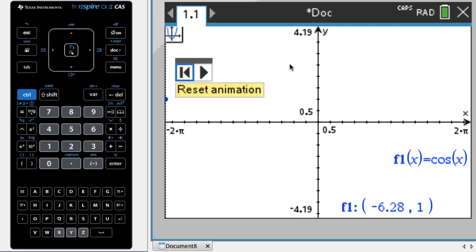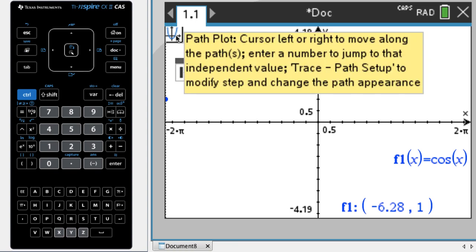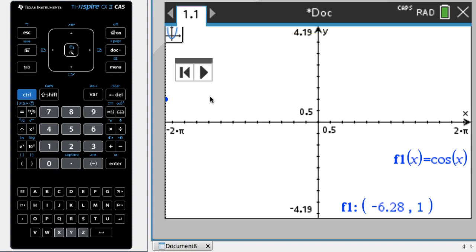And what I want to do this time is there's kind of an interesting feature. If you hover over this, so use the trackpad and get over here, if you can, it'll tell you cursor left or right to move along the path, enter a number to jump to that independent value. That's what I'm most interested in. So what I'm going to do is I'm going to type negative two pi, just press negative and then two pi. It doesn't really make it clear that that's where you should do it. But that's how it works. Press enter, nothing happens. I wasn't expecting that because that's the left edge.